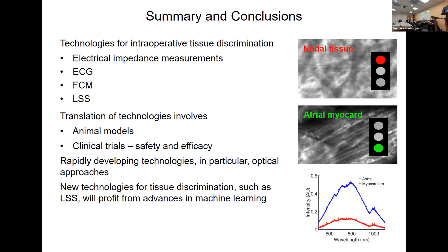Machine learning is playing a major role in these developments. A number of analyses that were initially not straightforward are now much more simplified because in the last 10 years, machine learning, neural networks, hardware support, and large software libraries have really facilitated analyses that were previously not thought possible. For spectroscopic data, for instance, there's no hope that an engineer or cardiac surgeon could look at the spectra and identify the tissue type — sophisticated analysis and machine learning are the way to go.